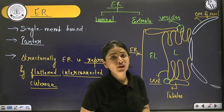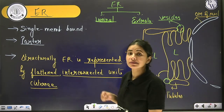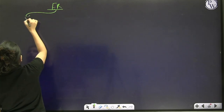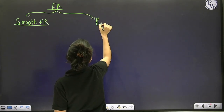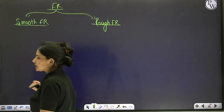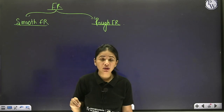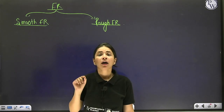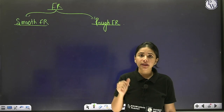Proceeding towards the function of ER: functionally, the most important function of ER is synthesis of proteins and lipids. Depending on which type of ER synthesizes these, there are two types — smooth endoplasmic reticulum (SER) and rough endoplasmic reticulum (RER). Smooth ER means the cisternae are completely smooth with no ribosome attachment, whereas rough ER has ribosomes attached to the cisternae.